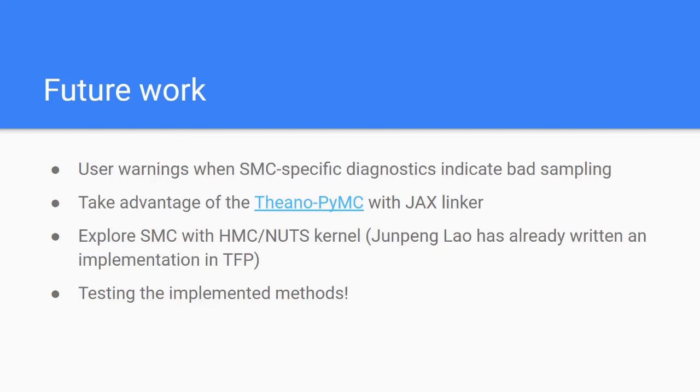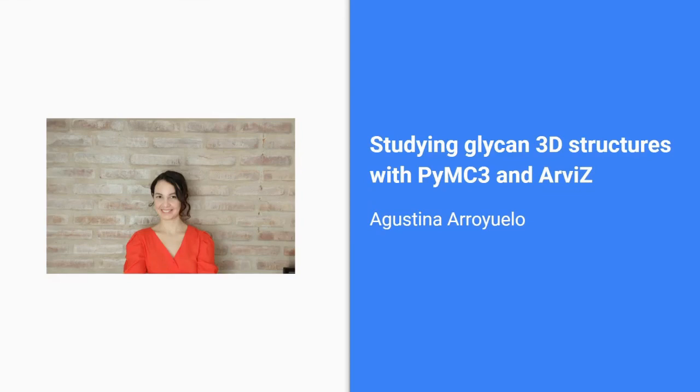Some of the future work that's left to do includes implementing user warnings when SMC diagnostics indicate a bad sampling, taking advantage of the JAX linker for PyMC to execute multiple chains in parallel more efficiently, exploring SMC with the Hamiltonian Monte Carlo or NUTS kernel—here Junpeng has already written an implementation in TensorFlow Probability—and lastly, implemented methods need to be tested for both accuracy and computational performance to see what kind of trade-offs they bring to the table.